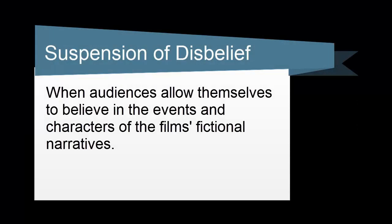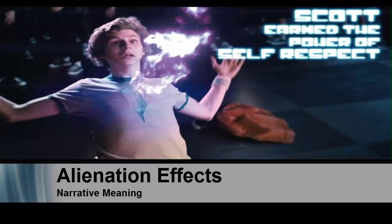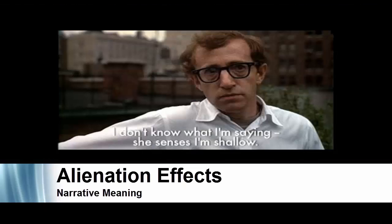Films depend on a willing suspension of disbelief that allows audiences to temporarily believe in the events and characters of a film's fictional narrative. That's why movies like The Matrix and Star Wars are successful — because for those couple of hours, we believe these events are actually happening. Sometimes filmmakers don't want you to suspend your disbelief completely, so they use alienation effects to remind you that you're just watching a movie.